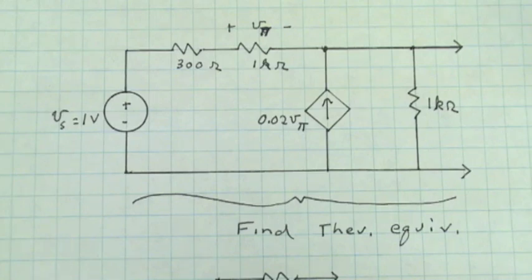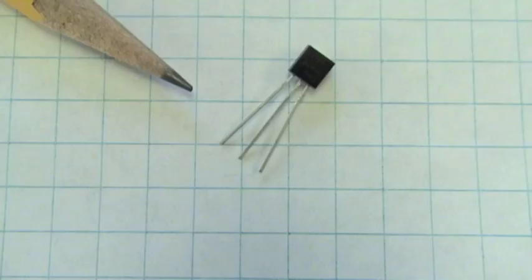We'll talk about op amps later. And a passive element is an element that cannot supply an average power greater than zero over an infinite time interval. Now, here's an example of a transistor such as might be used in that emitter follower amplifier.